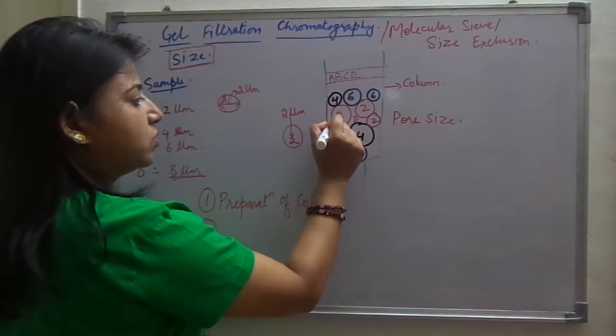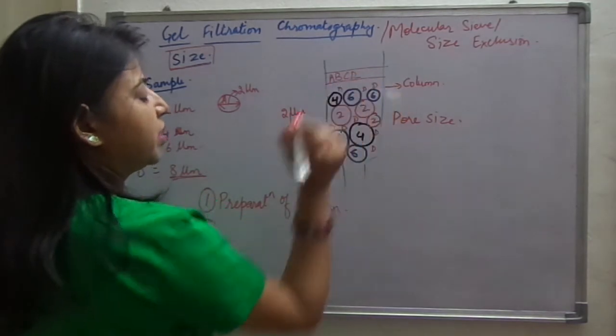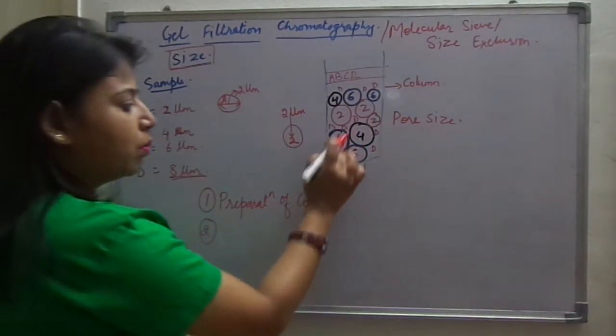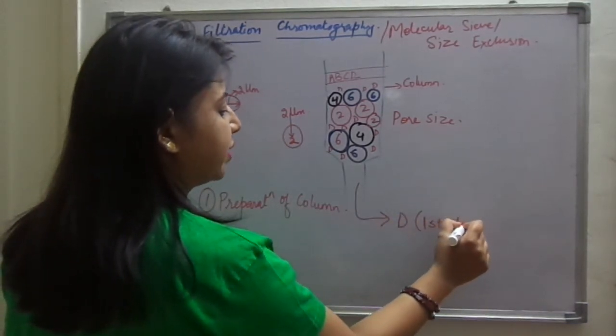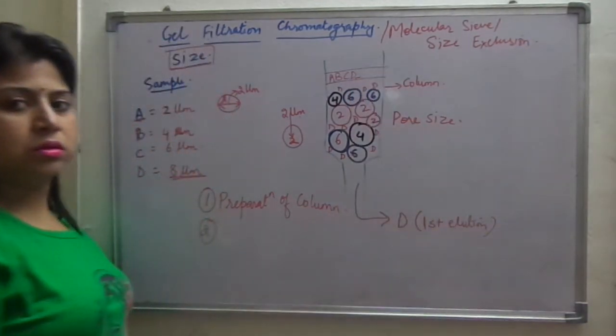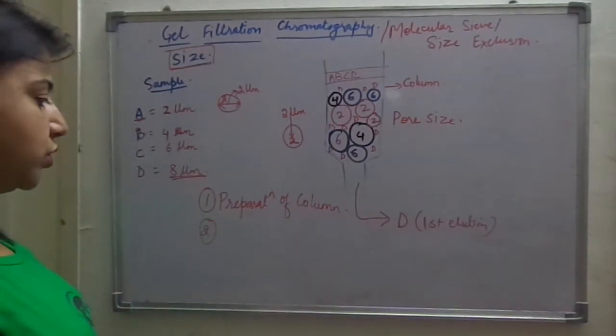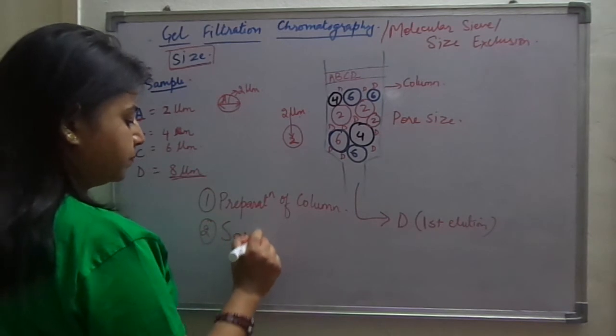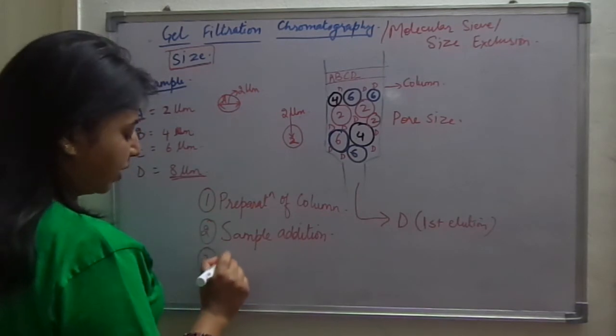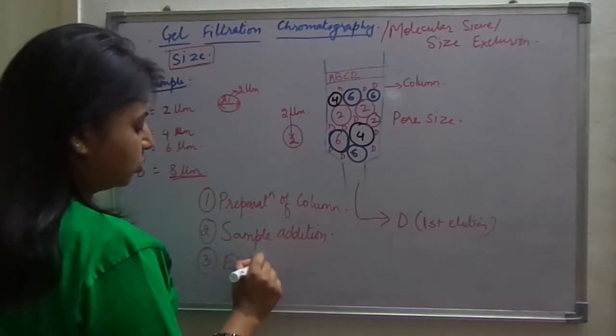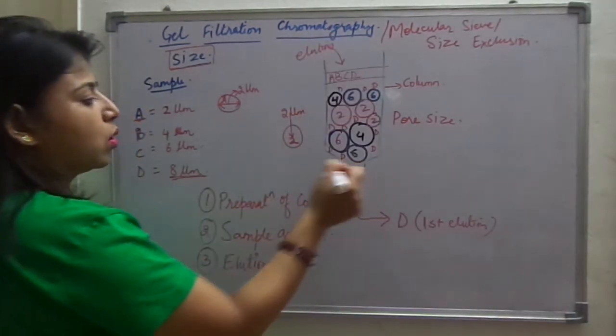D will always remain in the intercellular spaces present all over here and won't be able to enter any bead. So, it will come out, it will be eluted first of all, first elution. By elution, I mean coming out, the process of bringing the samples out of the column which is going to be, this is the sample addition and the third step in any column chromatography is elution. Elution is adding a buffer over here so that the sample components can come out.